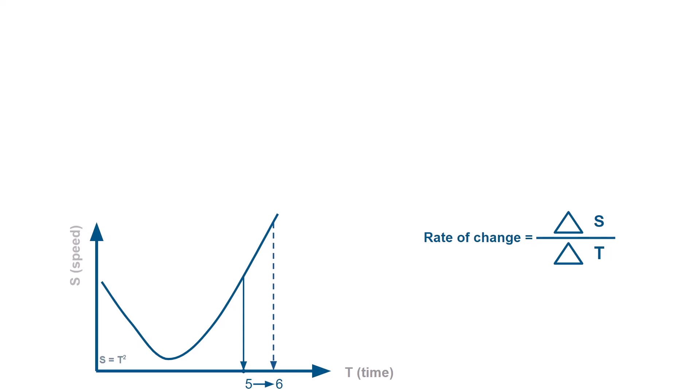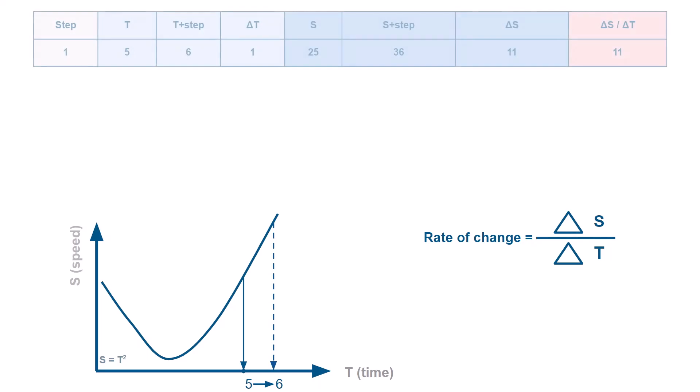Afterwards, we will decrease our step little by little and calculate rate of change at each step. So if step is 1 unit, delta T equals 6 minus 5 which equals 1 and delta S equals 6 squared minus 5 squared which equals 11, then the rate of change equals 11 divided by 1. You can pause the video and look through again.